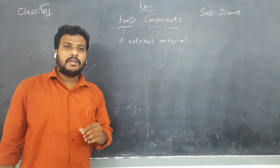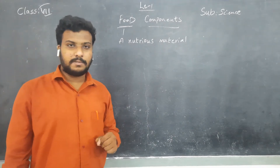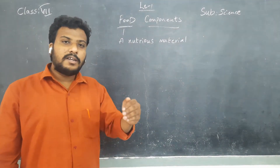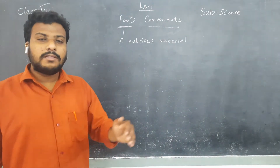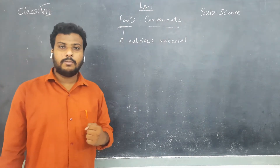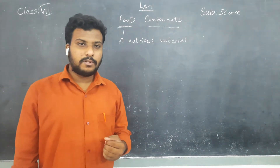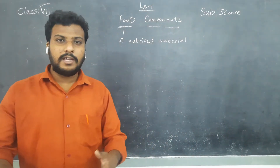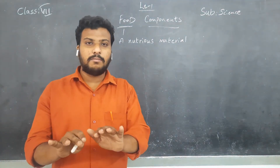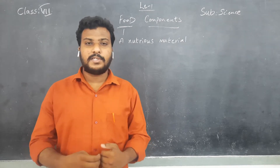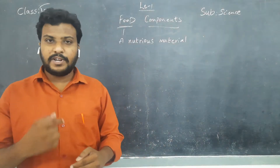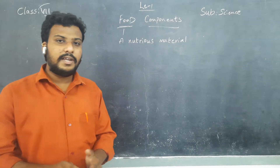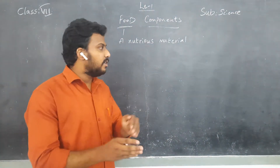Food consists of all the nutrients in adequate amounts. The nutrients present in the food are obtained by our body to perform various activities — not just external things, but internal processes like the circulatory system, respiratory system, and nervous system. To perform all these systems, we need nutrients.